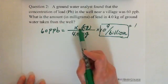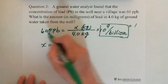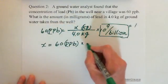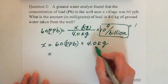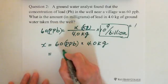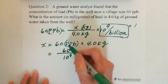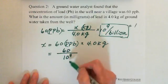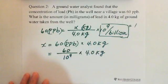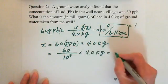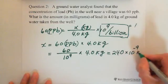So X in kilograms equals 60 PPB — that's 60 parts per billion, which is 60 over 10 to the 9th exponent — multiplied by 4.0 kilograms. Four times 60 is 240, so X equals 240 times 10 to the negative 9th exponent kilograms, which in scientific notation is 2.4 times 10 to the negative 7th kilograms.